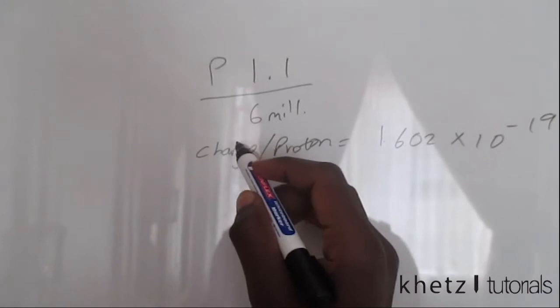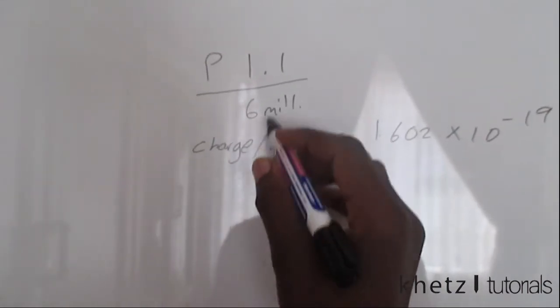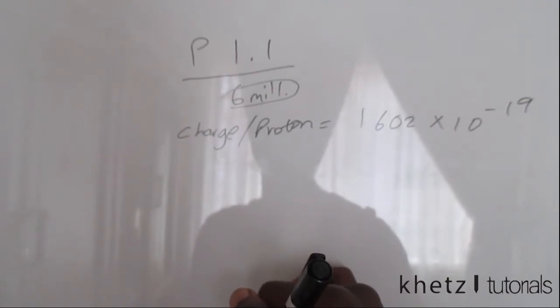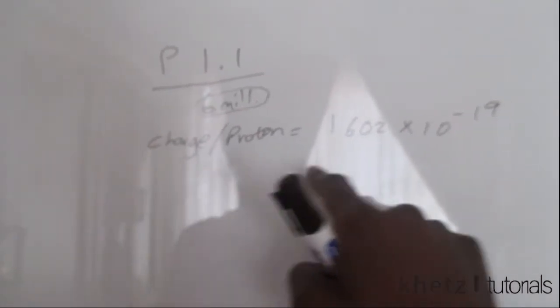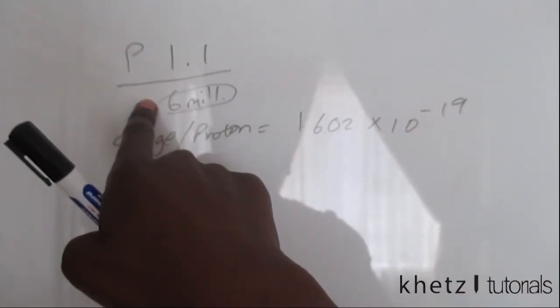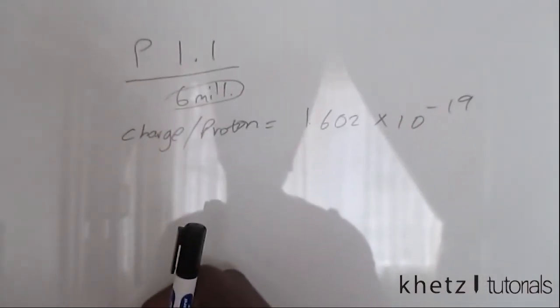We're supposed to find the charge present in six million protons. The formula is: charge per proton multiplied by the number of protons. That's simply it.